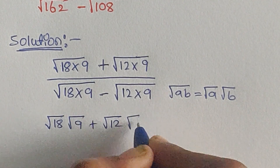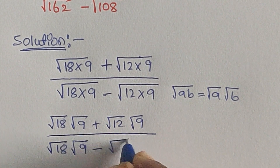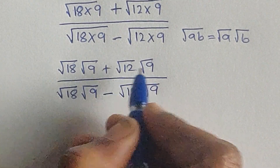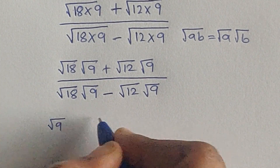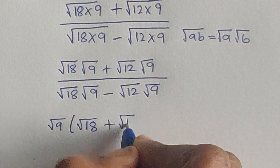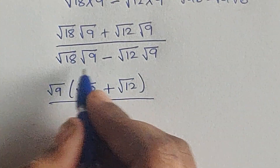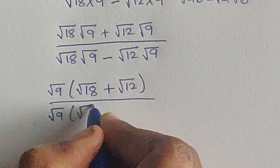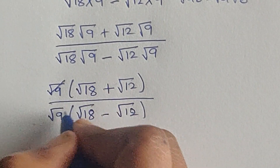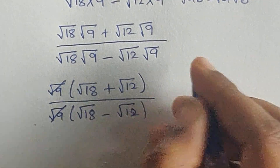Using this formula, we write: square root of 18 times square root of 9, plus square root of 12 times square root of 9, divided by square root of 18 times square root of 9, minus square root of 12 times square root of 9. In the numerator, square root of 9 is common — take it out. Same in the denominator, square root of 9 is common — take it out. So we have square root of 18 plus square root of 12, divided by square root of 18 minus square root of 12. The square root of 9 terms cancel.